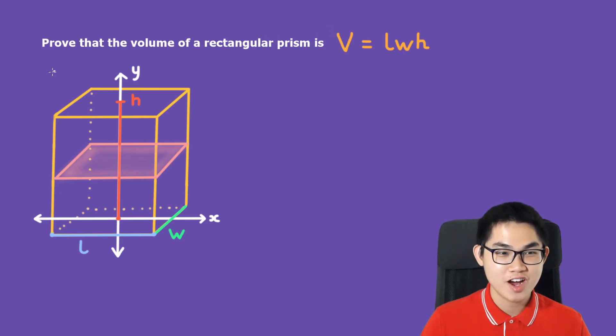Here I've drawn the diagram for the rectangular prism. The length is L, the width is W, and the height is H.